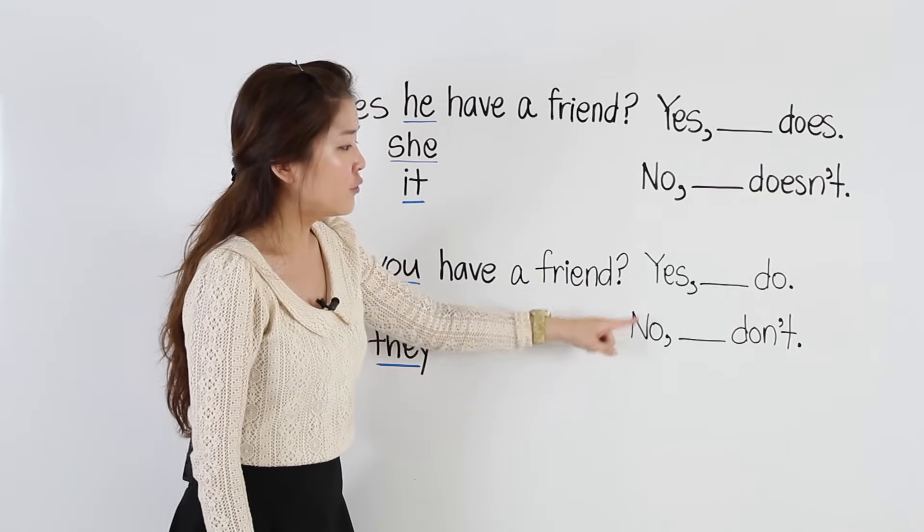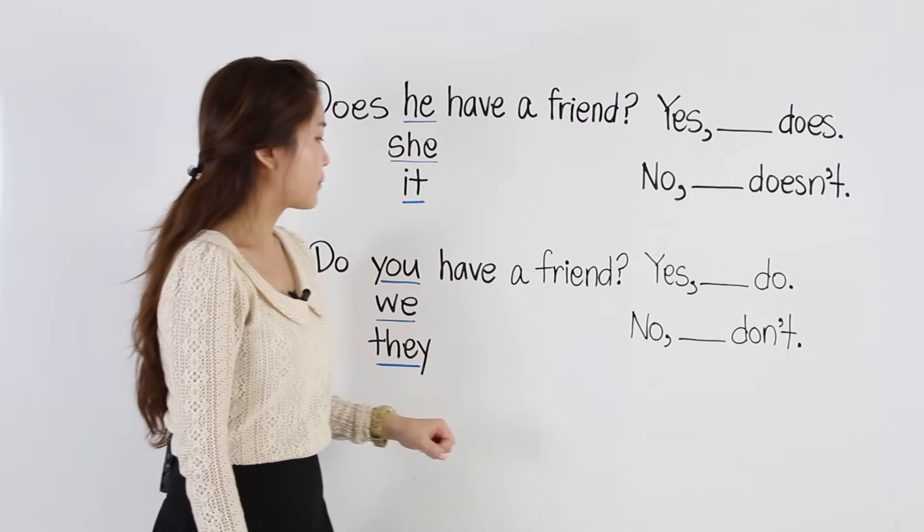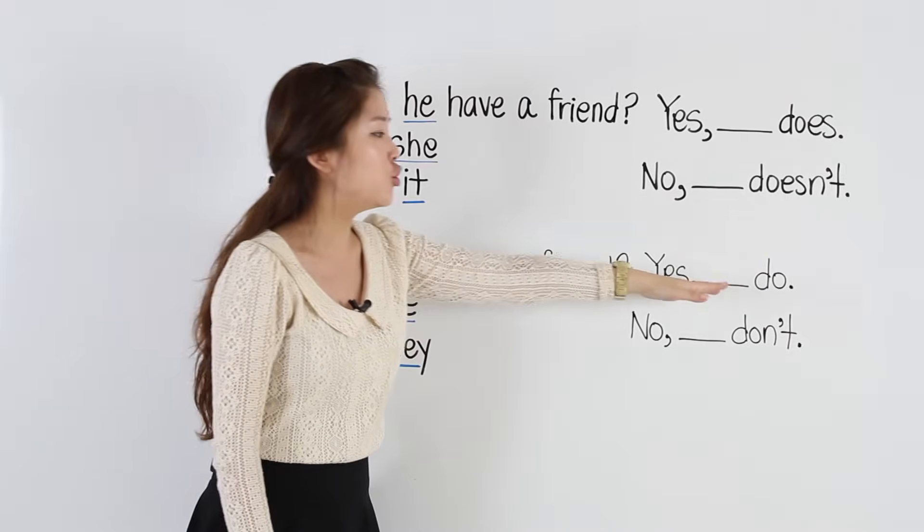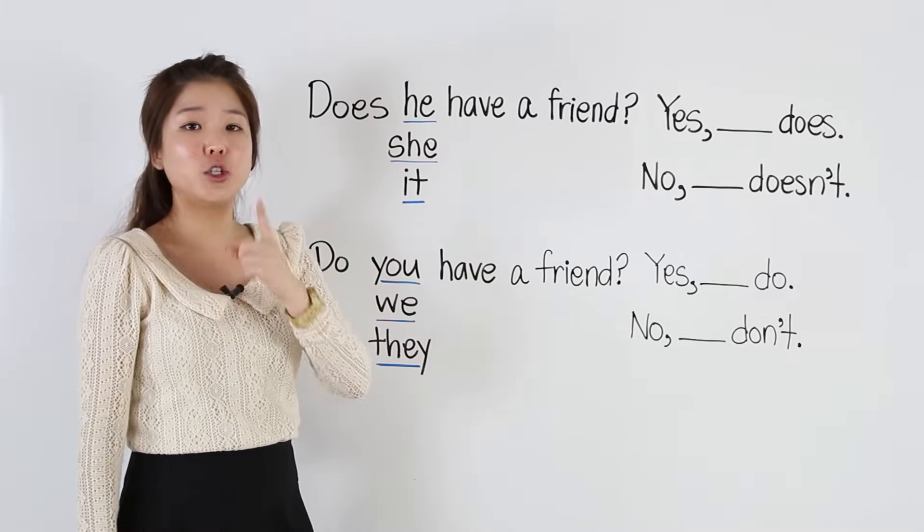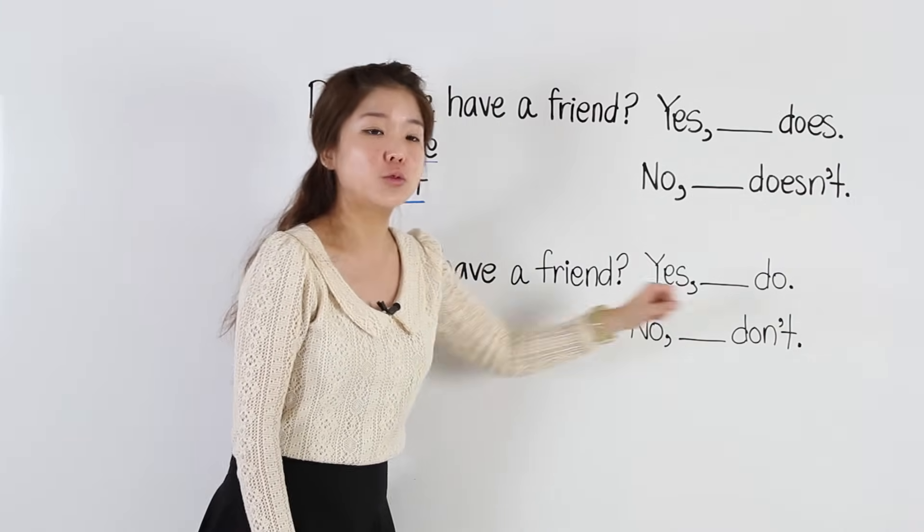Okay, and again we have two answers. We finish with do or don't. So, do you have a friend? Yes, I do. Right? The question is asking you. So, you say, I do or no, I don't.